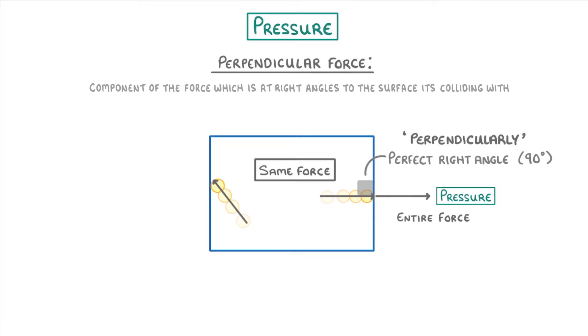This particle on the right is striking at a perfect right angle or perpendicularly to the surface. This means that the entire force would be used to generate pressure on the container wall. In contrast, for this particle on the left, only a small component of its force would be perpendicular to the container as we can see if we split its force into vertical and horizontal components. This means that it's only this much smaller force that would be used to create pressure. In practical terms, just think of it as the difference between a head-on collision and grazing a wall at an angle.